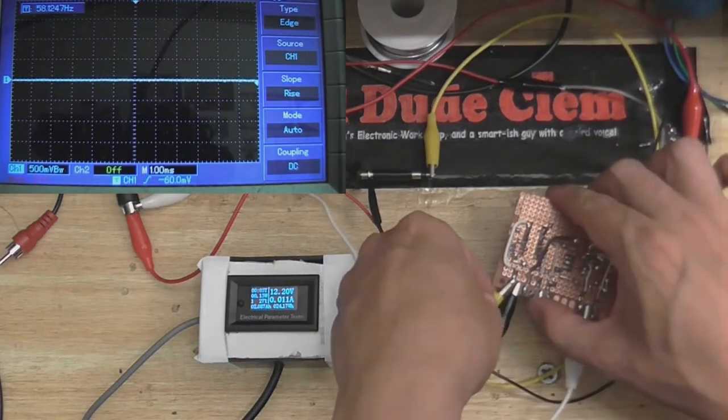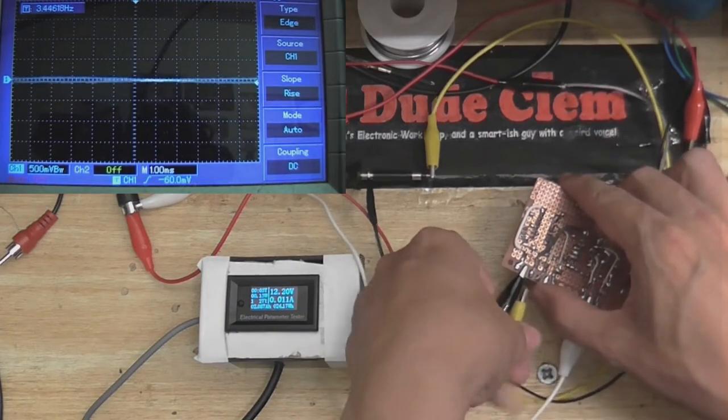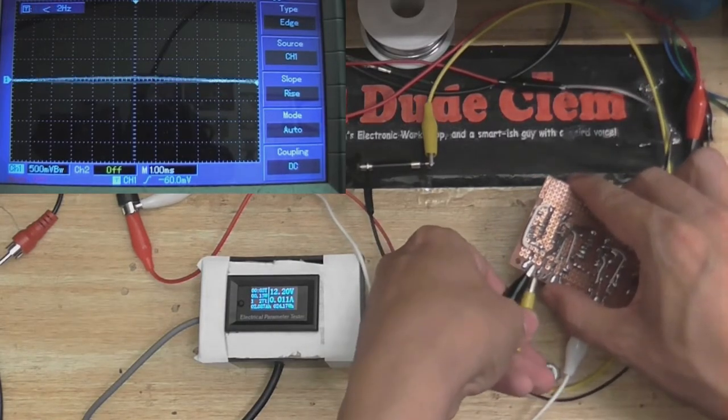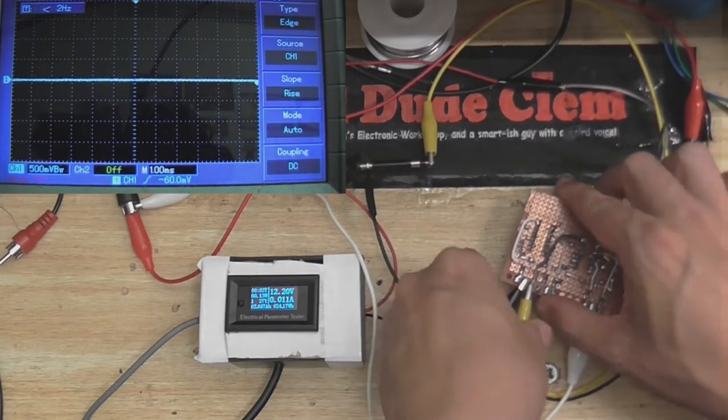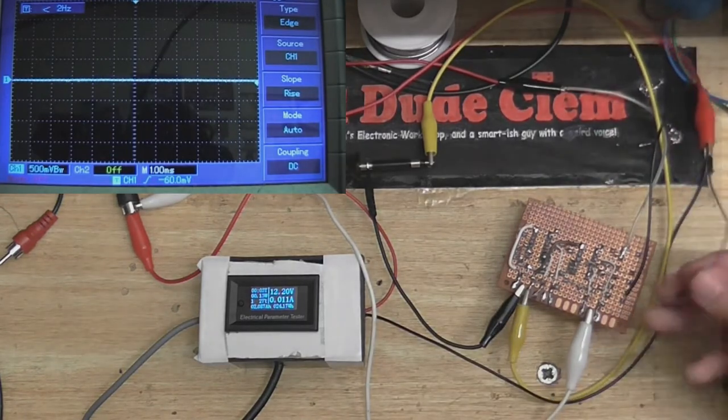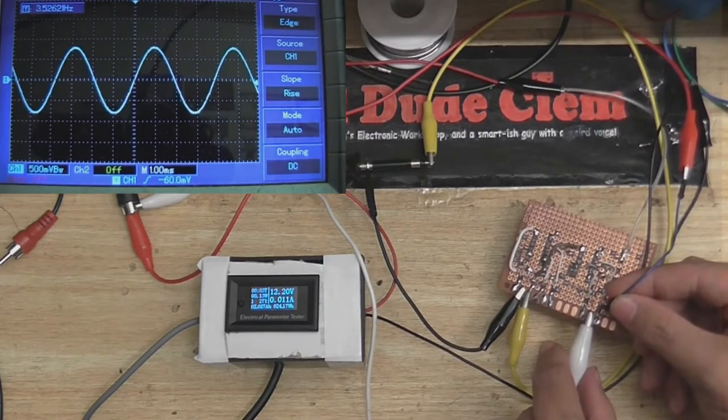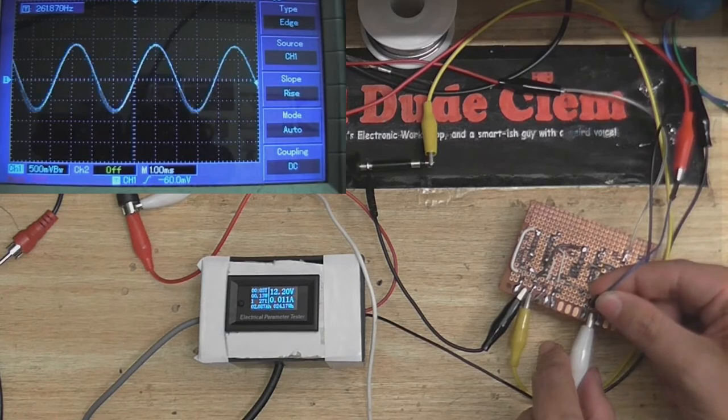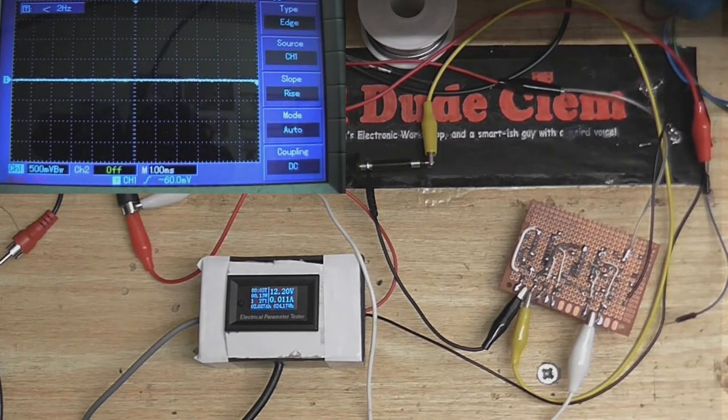Let me just connect up the scope to the other one again. Make sure that I haven't done something stupid. Let's just test this side again. Yep. That's working. The other side is not.